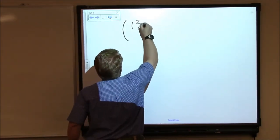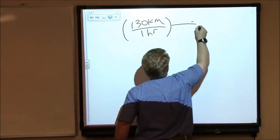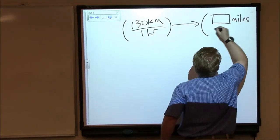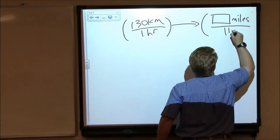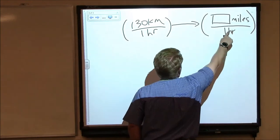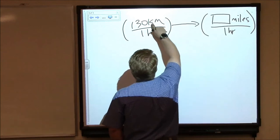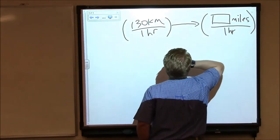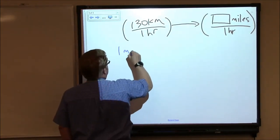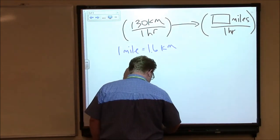So this is where we start, 130 kilometers in one hour. We want to end up with some number of miles in one hour. So I notice immediately that the units on the bottom are the same, so I don't even need to think about the units on the bottom. But I do need to somehow find a ratio between kilometers and miles. I did some research, and I found that one mile is the same distance as 1.6 kilometers.